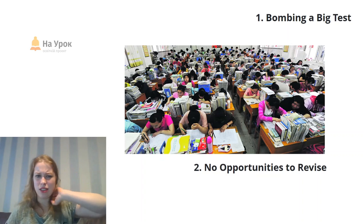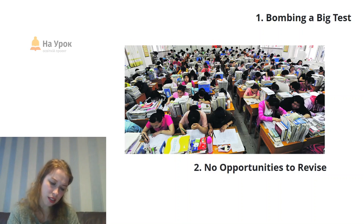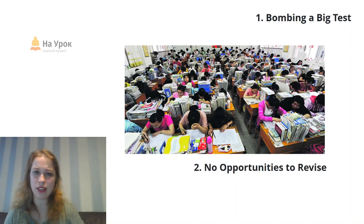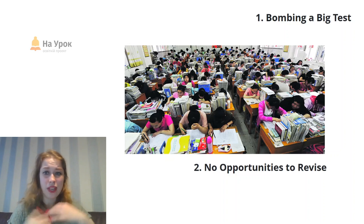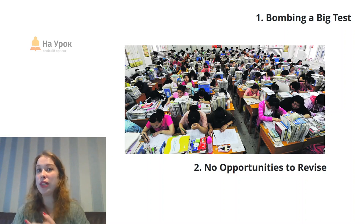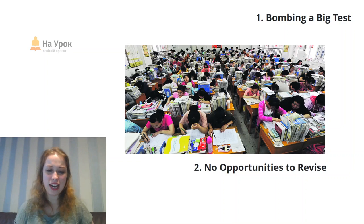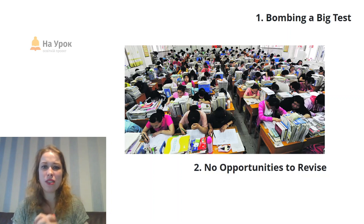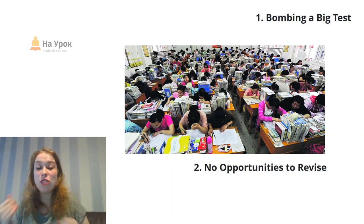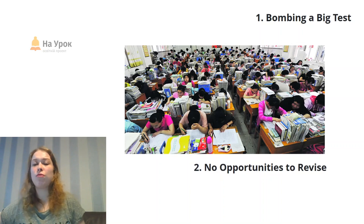Apart from all the revision activities in the book, students don't consider those as revision time — they think it's just another exercise. So give them that little illusion of revision time and there will be less stress. What I do with my big tests, especially with teenage groups going through ZNO or international exams, is hold 'rainbow tests' — printed on different colored papers: red, yellow, blue for use of English, yellow for reading, orange for writing.